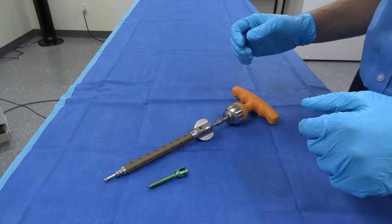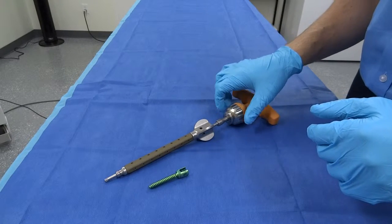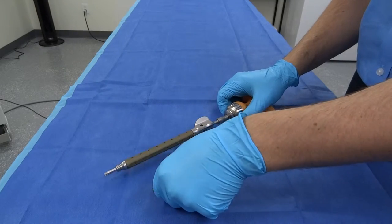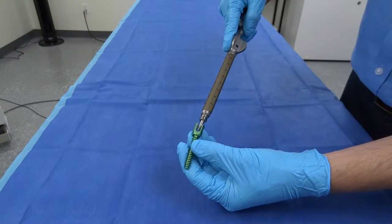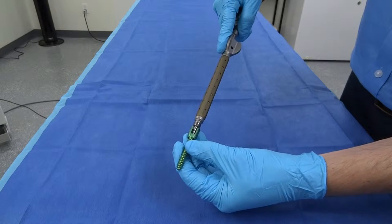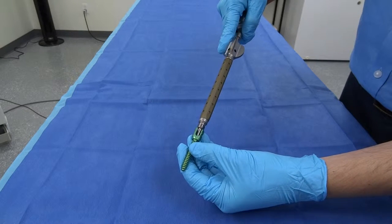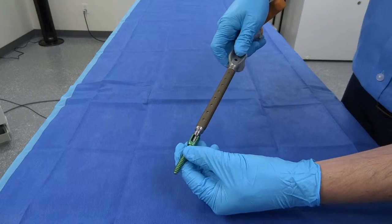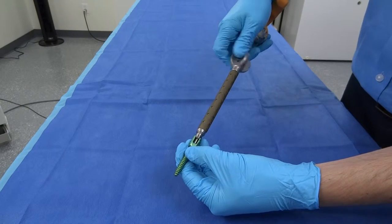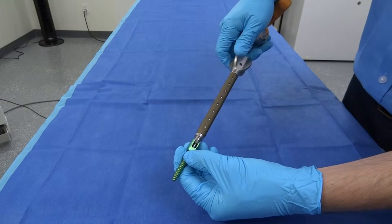To load the polyaxial screw on the polyaxial screwdriver, first align the hexalobe tip with the hexalobe in the screw head. Then drop the threaded sleeve into the screw head and spin the ball handle clockwise to thread the screwdriver in.